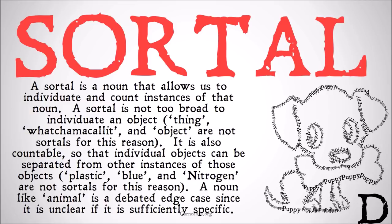Sortals are also countable, so that individual objects can be separated from other instances of those objects. Terms like 'plastic,' 'blue,' and 'nitrogen' aren't really sortals for this reason. A plastic bag, a blue table, or a nitrogen atom might be sortals, but 'plastic,' 'blue,' and 'nitrogen' on their own don't distinguish specific instances.